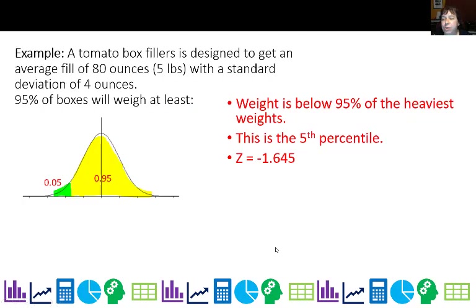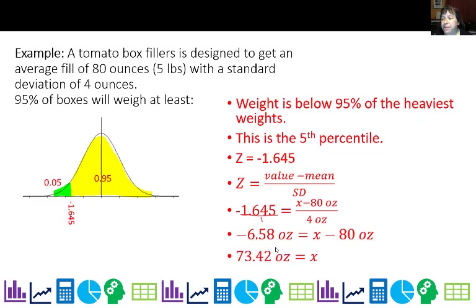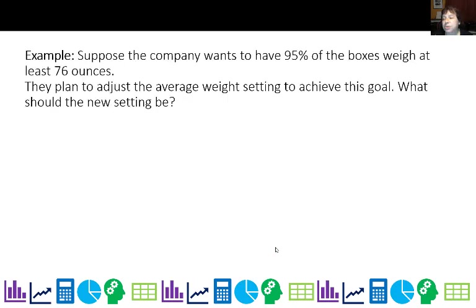Now that we know z is negative 1.645, we can find the value. z equals value minus mean over standard deviation. Substituting in negative 1.645, the mean of 80, and standard deviation of 4, then cross-multiplying: negative 6.58 equals x minus 80. Adding 80 to both sides, x is 73.42 ounces. So 95% of boxes weigh at least 73.42 ounces, according to the normal model.